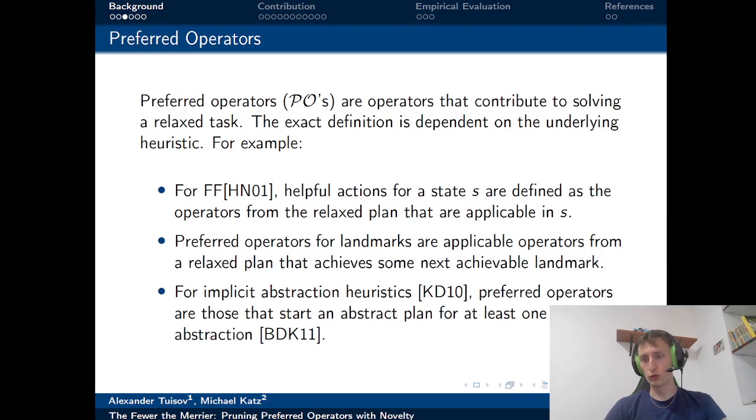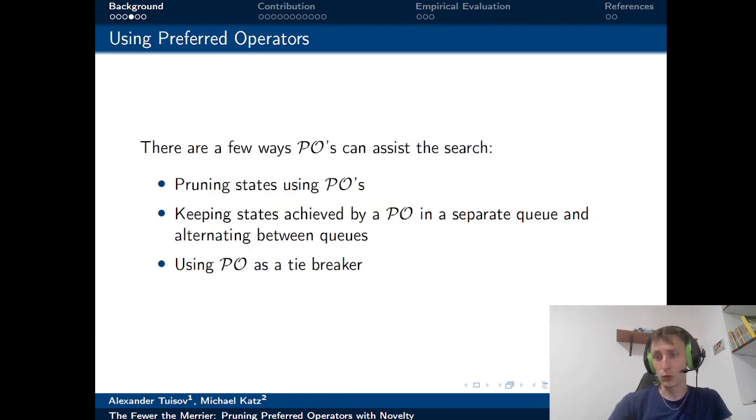In our paper, we prune preferred operators using novelty. So we'll give a brief reminder about both concepts. First, preferred operators. A preferred operator is an operator that is a part of a relaxed plan, a plan that solves some relaxed task. The exact definition is dependent on the underlying heuristic, but in all cases, the preferred operators have a tendency to help us solve our original task. The most common way to use them is to keep the states achieved by preferred operators in a separate queue, and then alternate between the queues.